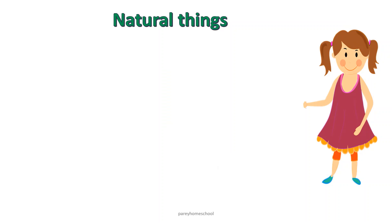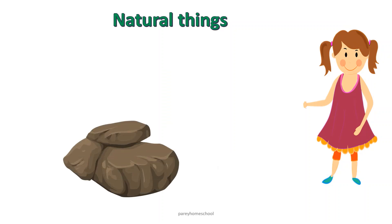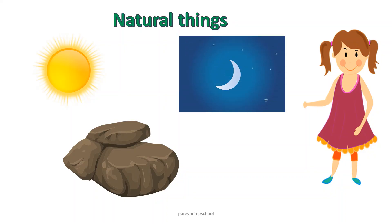Natural non-living things: Rock is a natural thing — it is not man-made, and it is a non-living thing. Sun is a natural thing and it is a non-living thing. Moon is also a natural thing and it is a non-living thing.